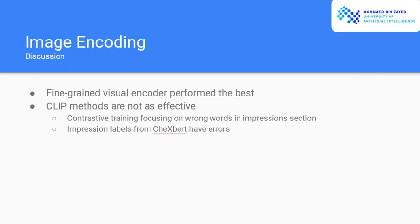Now we're talking more about CLIP methods. One of the reasons why we think that CLIP methods is not doing so well is because during contrastive training, CLIP encoder might be focusing on the wrong words in the impression section. It might be capturing wrong features that are not as important. Also, impression labels that come from CheXpert might have some errors, which might cause additional noise in the training and error.